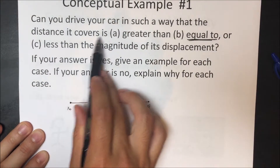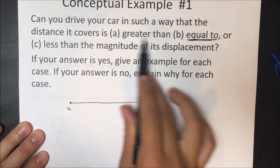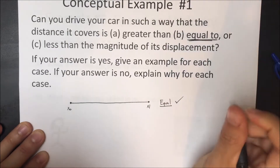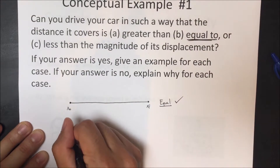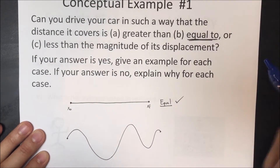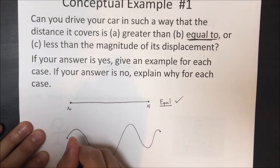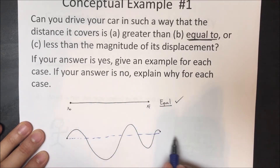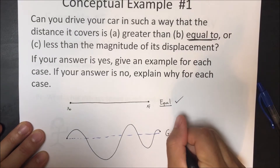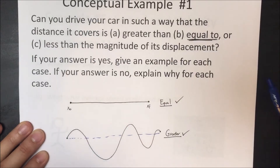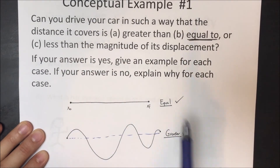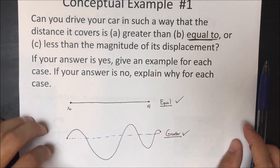Can the distance be greater than the magnitude of displacement? Yes. If you went in a zigzag, the distance traveled is longer, but the displacement is just from where you started to where you ended up — which is shorter. So the distance can be greater than the displacement. Can the distance be less than the magnitude of displacement? No, that is impossible. The minimum is equality when you drive in a straight line.